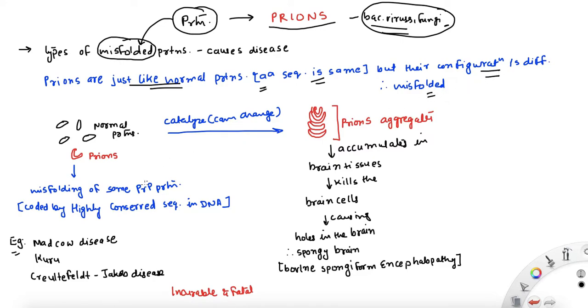And this misfolding happens at the same PrP protein that is coded by the highly conserved sequence in our DNA. That means all of us will have it, but where it is misfolded, where it is having the shape that it is not supposed to have, that's when it turns into prions.